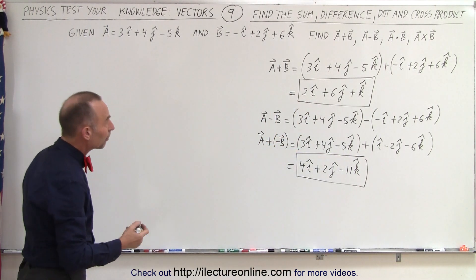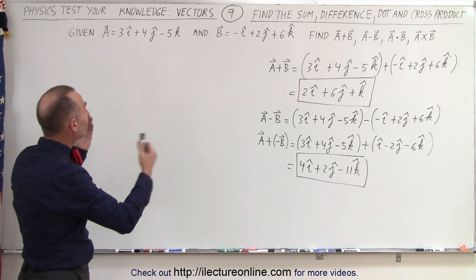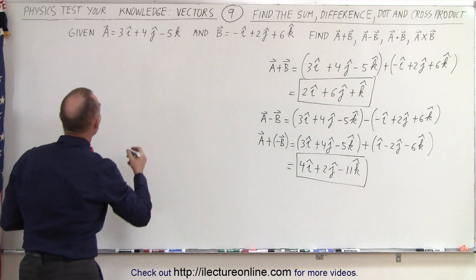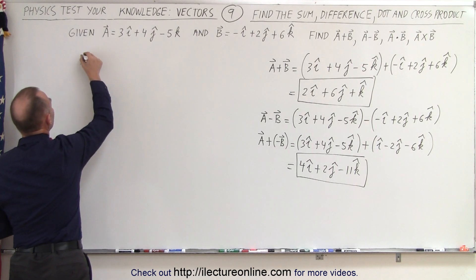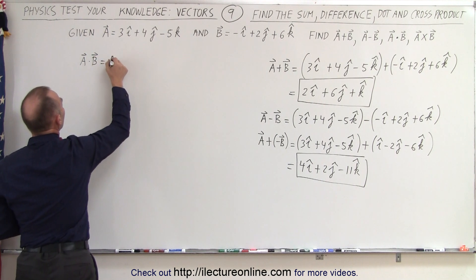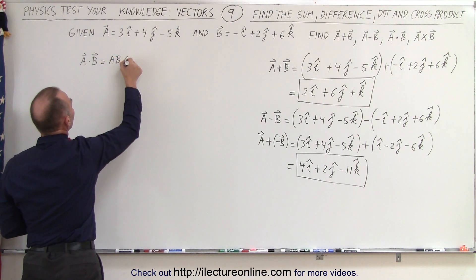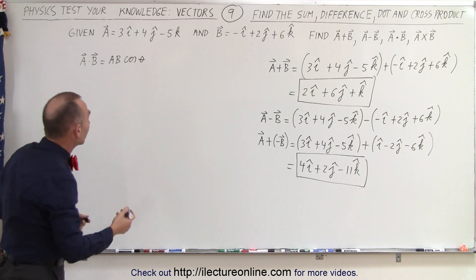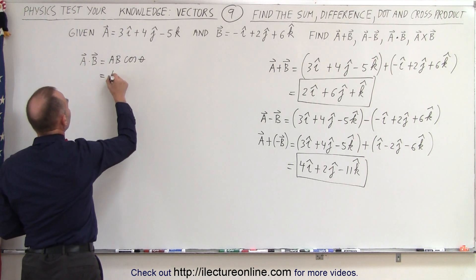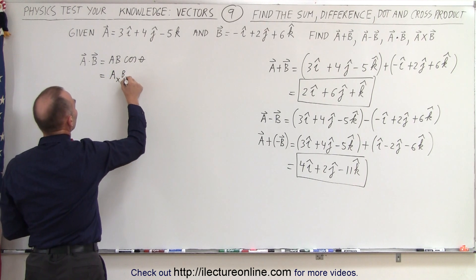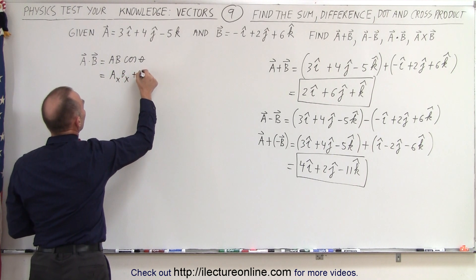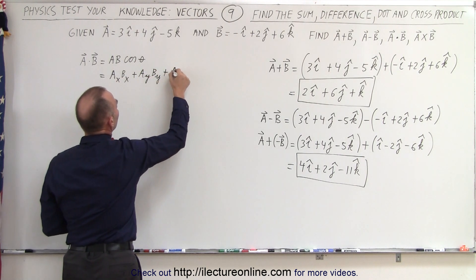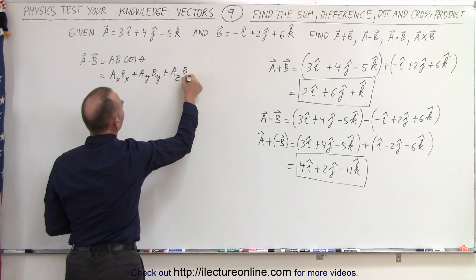Now, when we take the dot product, we use one of the two techniques. In this case, since we're given all the components of the two vectors, then this would be the best way to do the dot product. A dot b can be found by taking the magnitude of a times the magnitude of b times the cosine of the angle between them. But since we don't know the magnitudes and we don't know the angle between them, we can also find it by multiplying the x components together and multiplying the y components together.